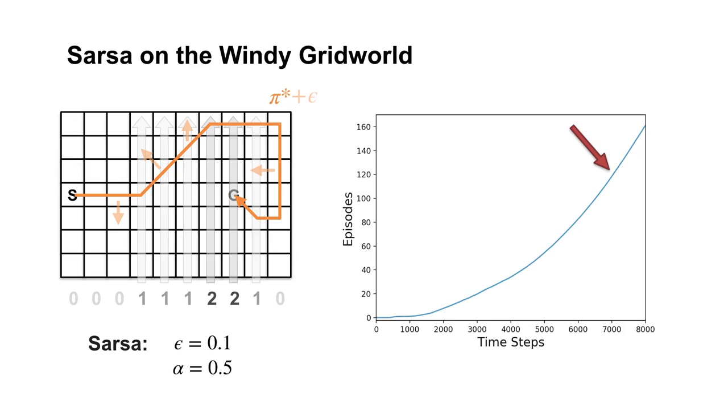For example, if the policy took the left action in the start state, it would never terminate. SARSA avoids this trap because it would learn such policies are bad during the episode. So it would switch to another policy and not get stuck.